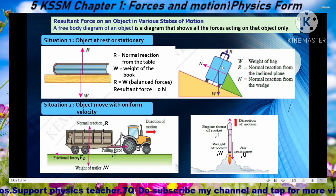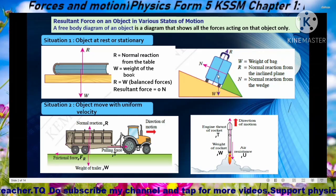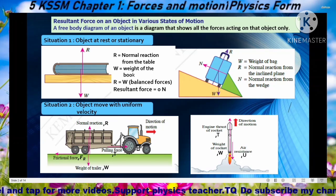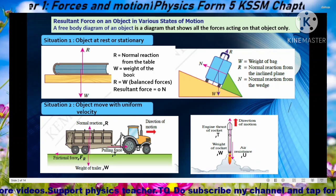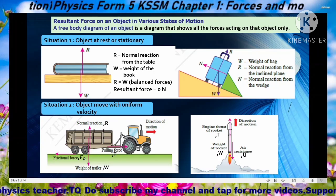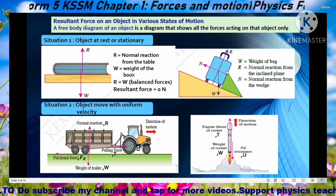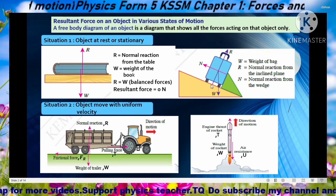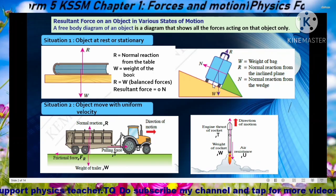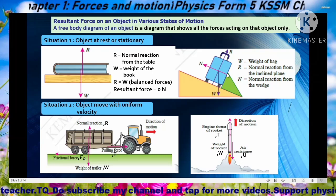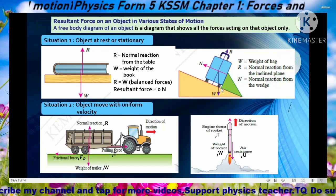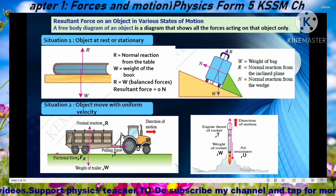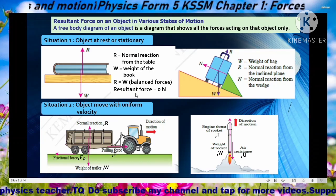This is a free body diagram for a book at rest on the table. The second diagram shows a trolley bag on an incline plane — it is not moving, just staying on the incline. You need to mark all the forces acting on the bag, not on the incline plane. There is weight W vertically downward, normal reaction force perpendicular to the surface, and also a normal reaction from the load placed on it. These are the forces that act on the trolley bag — this is its free body diagram.